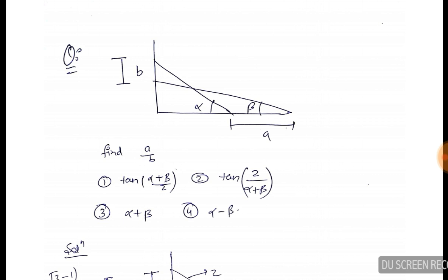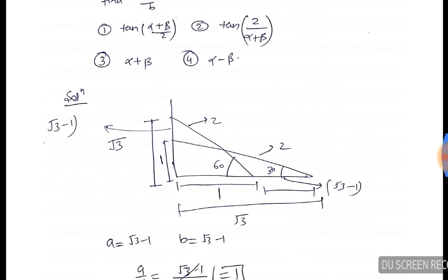Please pause the video and try the question first. I will discuss a shortcut. Think of the first angle as 60 degrees, and think of the other angle as 30 degrees.